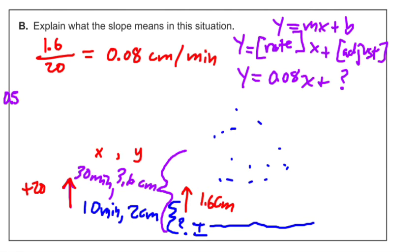Explain what the slope means in this situation. My units kind of do that explaining for me. It means that the snow is rising 0.08 centimeters every minute that it continues to fall. Nice and simple. So I just write that out.